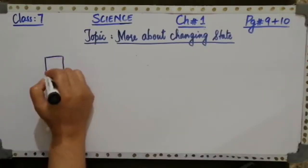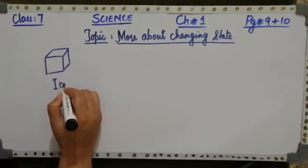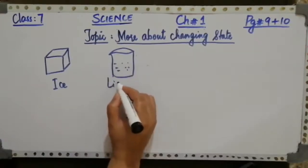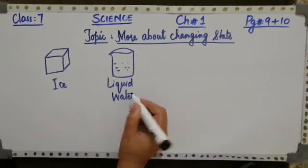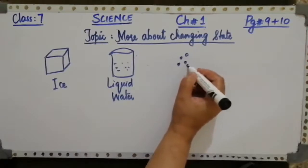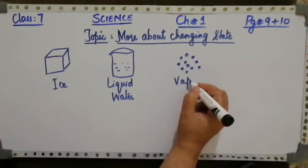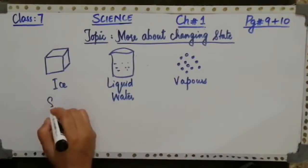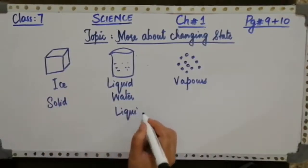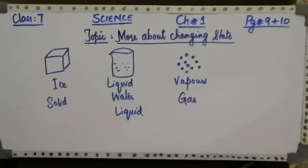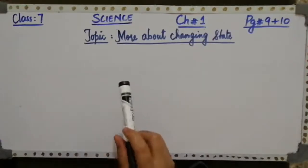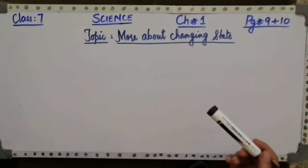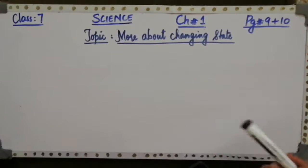In the solid state, water is ice. In the liquid state, water is liquid water. And in the gaseous state, water is in the form of vapors — water vapors. So water exists in all three physical states of matter: solid, liquid, and gas. In this topic we also learn about how different states of matter change — how ice changes into liquid water and liquid water changes into vapors.